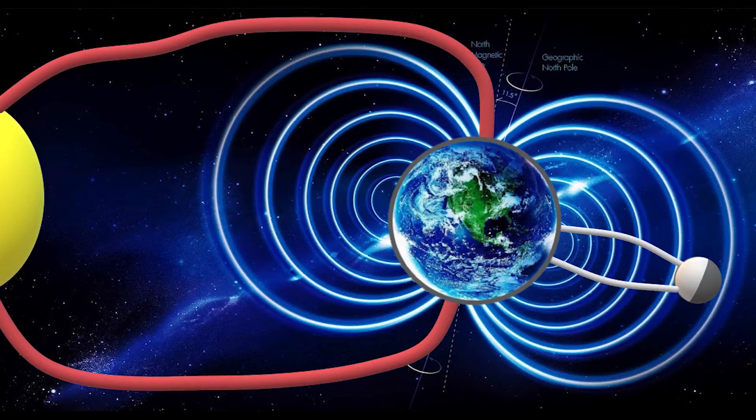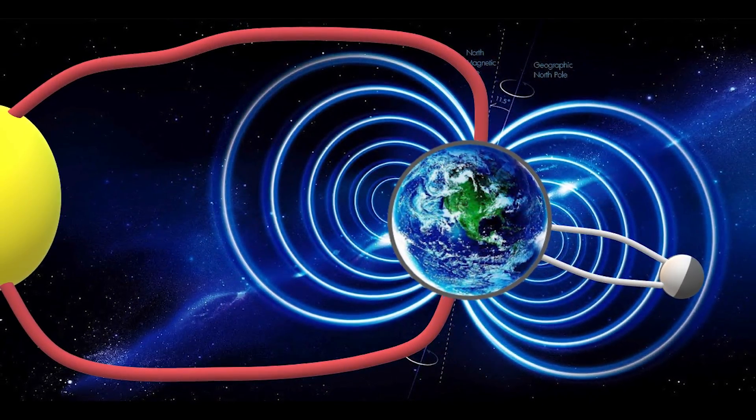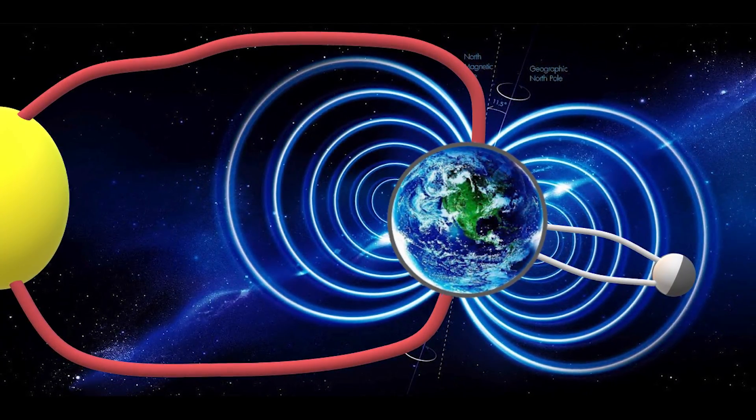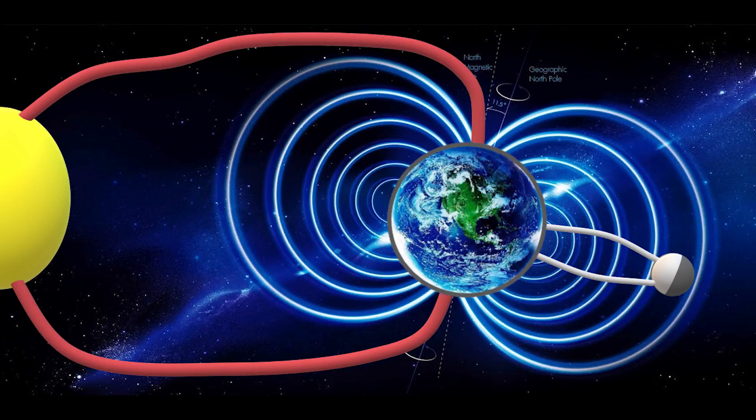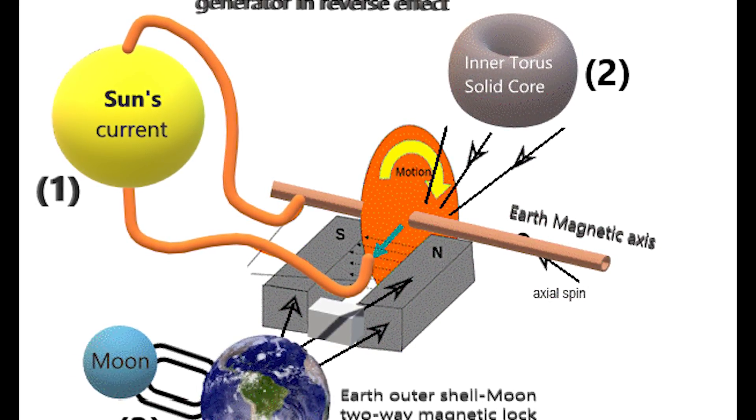The mechanism of the Sun's electromagnetic cord current passing through the poles creates a Faraday homopolar generator effect in reverse on the planet's inner solid core in conjunction with the moon's two-way gravitational grip onto the mantle and crust.